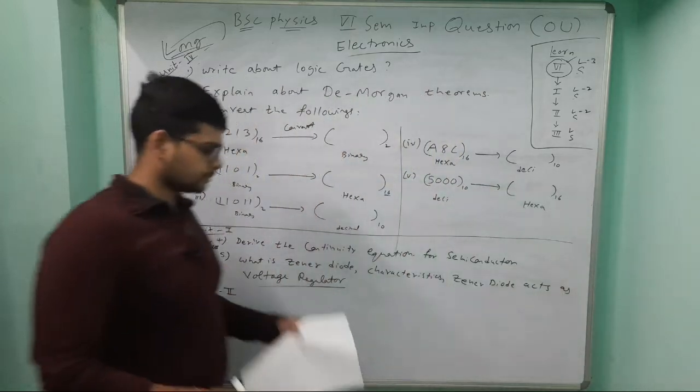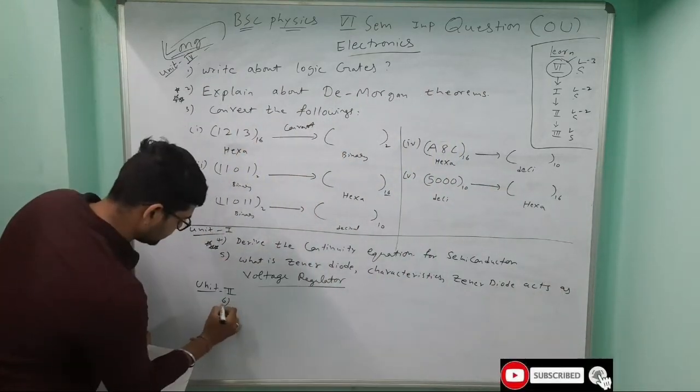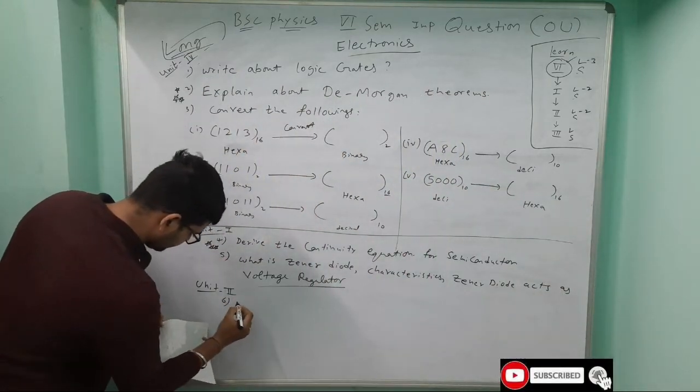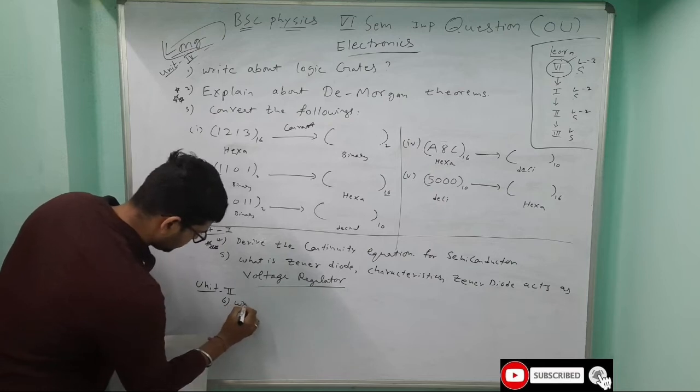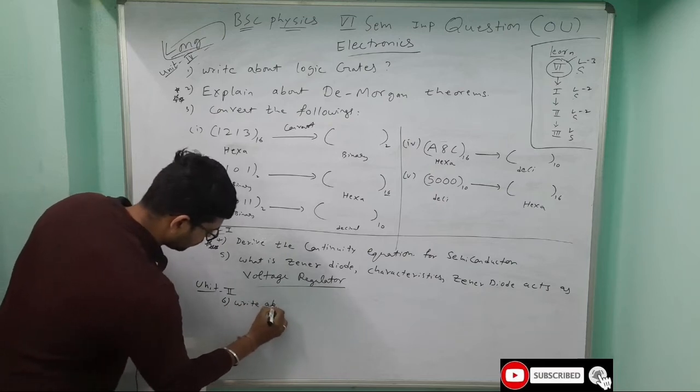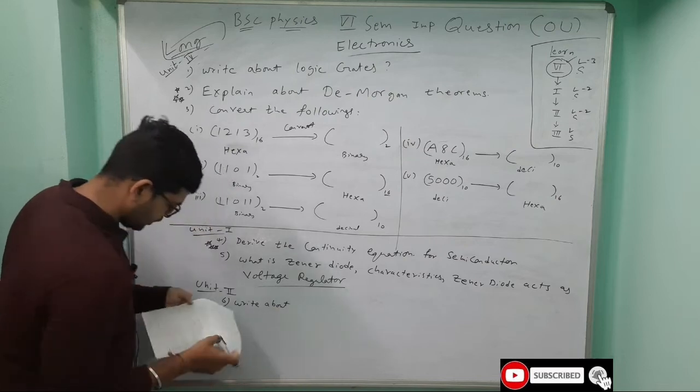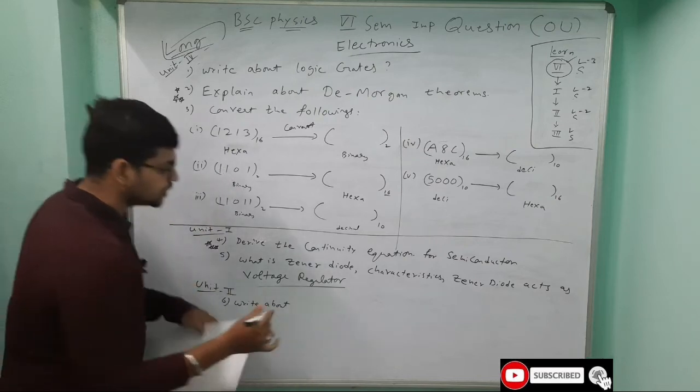Here I have given three questions in Unit 4, two questions in Unit 1, and two questions here also. Sixth question: write about phase shift oscillator.